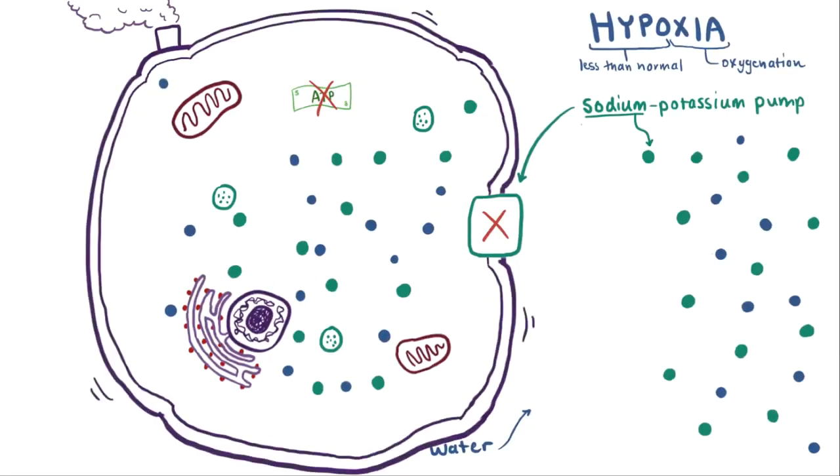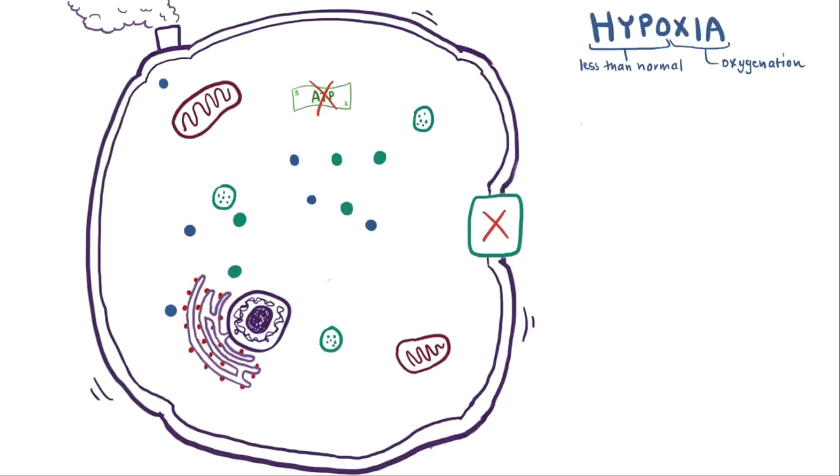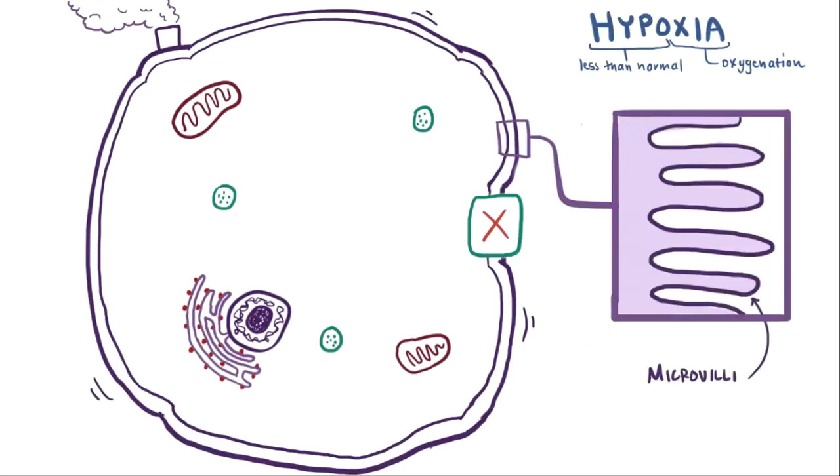And when the cell swells up, a couple things start to happen. First, usually you have these really tiny microvilli on the cell's membrane, which sort of look like little fingers, that help increase the cell's surface area, and therefore help the cell absorb more things.